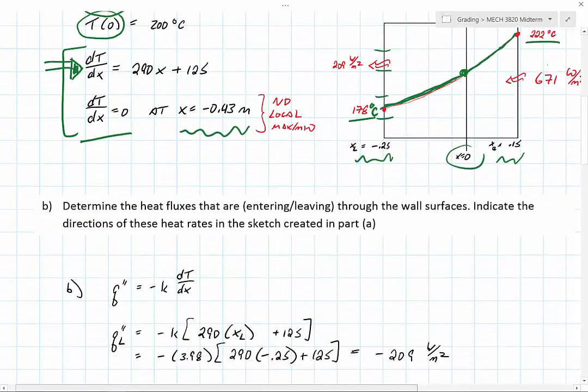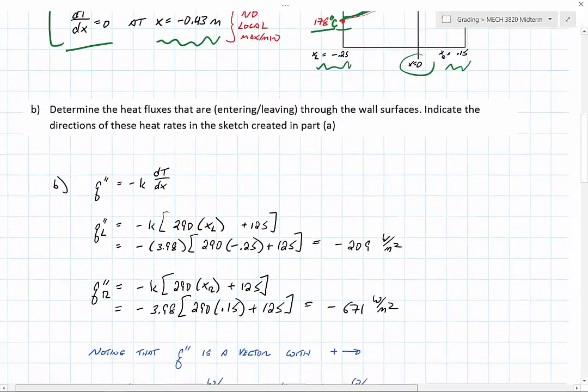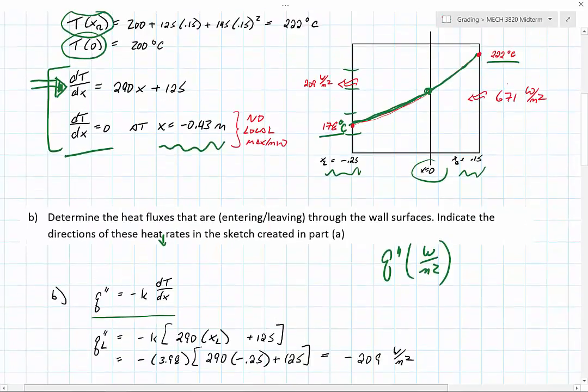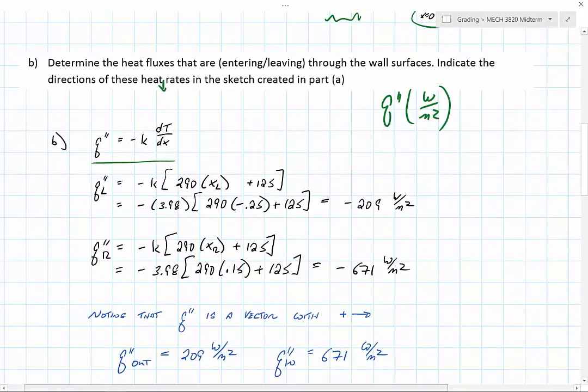The second part of this problem says let's determine the heat fluxes that are entering or leaving through the wall and indicate the directions. This is the expression of Fourier's law for a heat flux. There are still a few people that think dt dx is always delta t delta x, which is not the case. You have an expression for temperature as a function of x, so when you're applying Fourier's law you have to take the derivative, which we've already taken as being 290x plus 125.